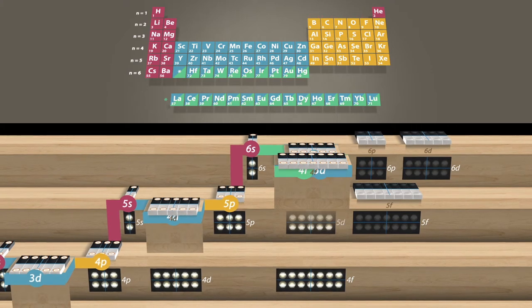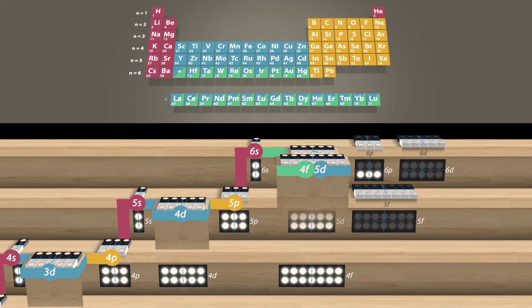This is followed by six elements. The 6p orbital gets steadily filled.